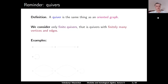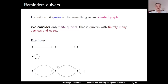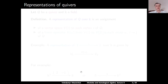Here are some examples. Here is a quiver which has three vertices and two edges. Here is a quiver which has one vertex and one loop — the edge which starts and terminates at the same vertex. And here is another quiver with three vertices. As you see, we allow multiple edges. We can have edges which go in one direction and in the reverse direction, and we allow loops.